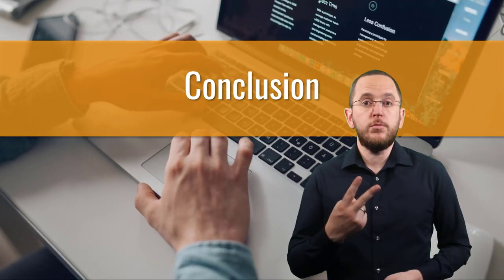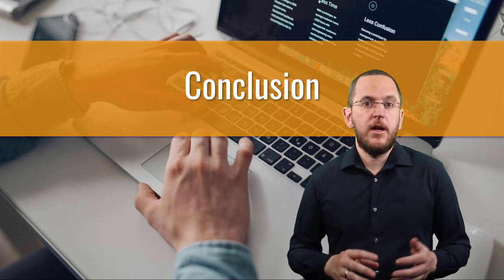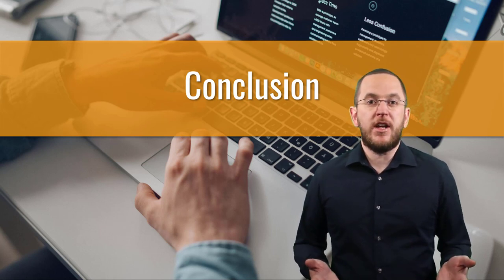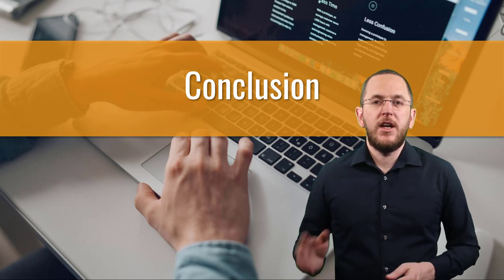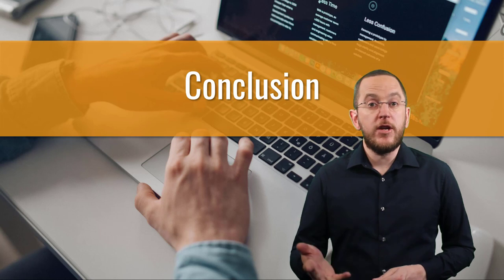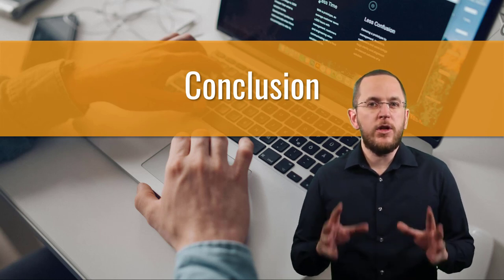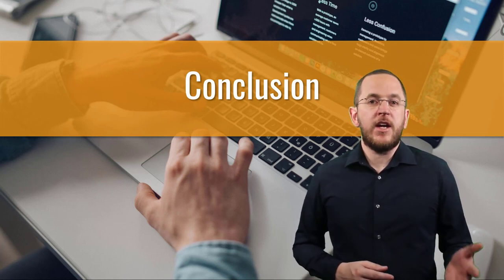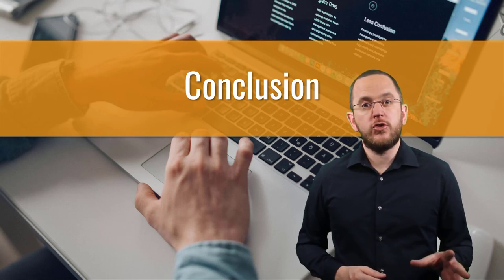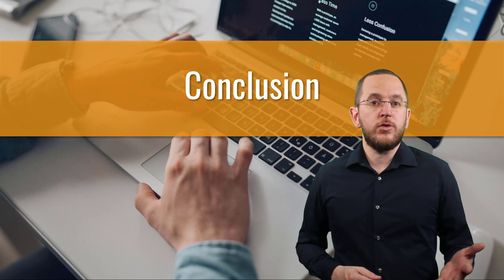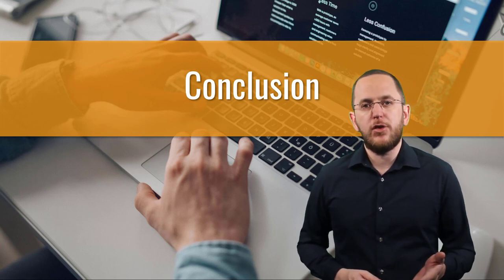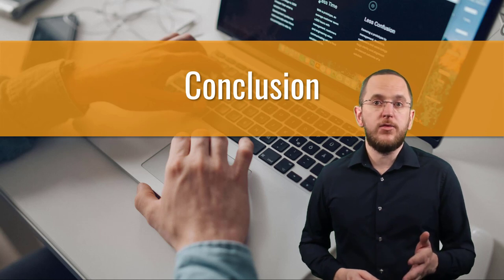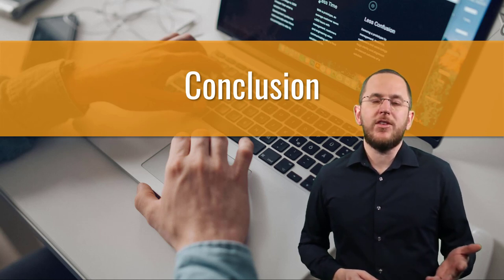JPA and Hibernate support two mappings to model composite primary keys. I generally prefer mapping composite primary keys as embedded IDs, but it doesn't support generated identifier values and can't be used in this situation. That's because you can only use the GeneratedValue annotation on an attribute annotated with @Id, and when using an embedded ID, none of your primary key attributes are annotated with @Id. Only the mapping as an ID class supports composite primary keys that use generated identifier values. You model all attributes on your entity class, annotate them with the required mapping annotations, and reference an ID class that fulfills JPA's requirements.